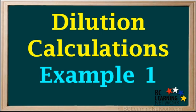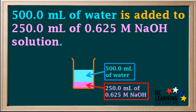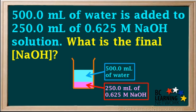In this video, we'll do an example of a dilution calculation using the dilution formula. 500 mL of water is added to 250 mL of 0.625 molar NaOH solution. What is the final concentration of NaOH?